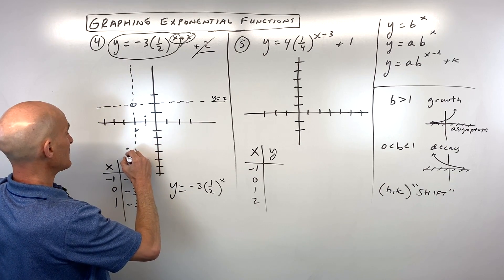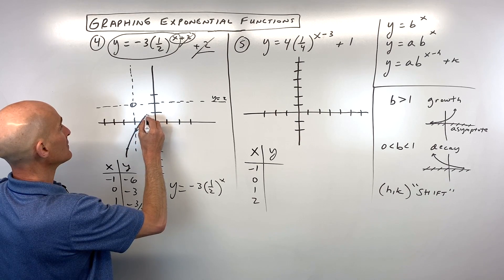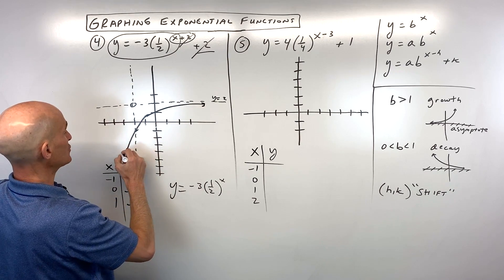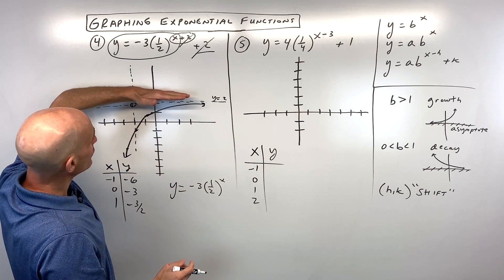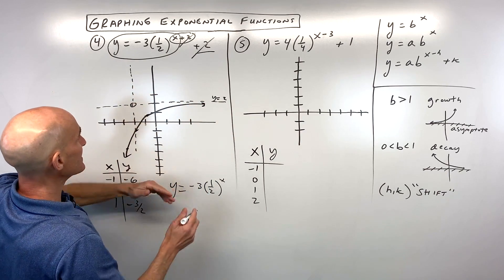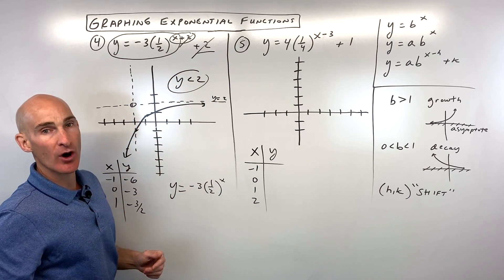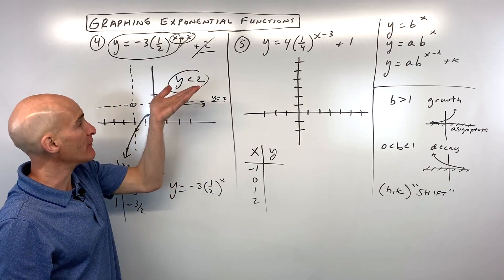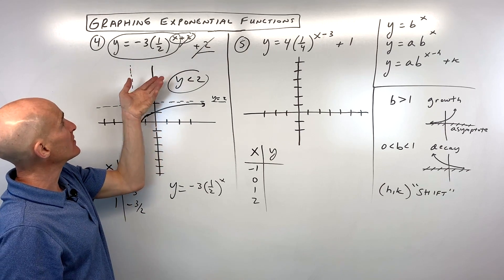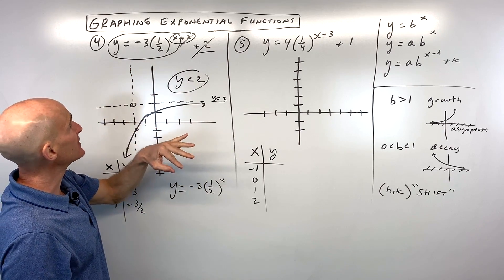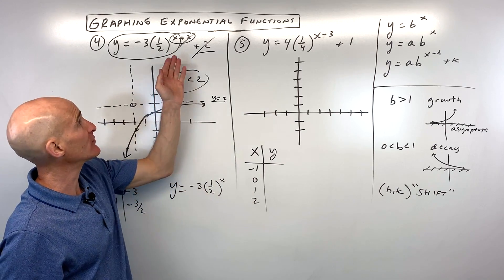The domain is all real numbers. The range is y is less than two — notice it's less than, not greater than, because the a value was negative. The negative reflected the graph over the x-axis originally, and then we shifted it up two.